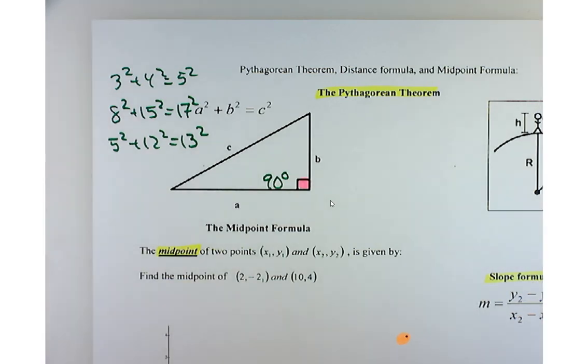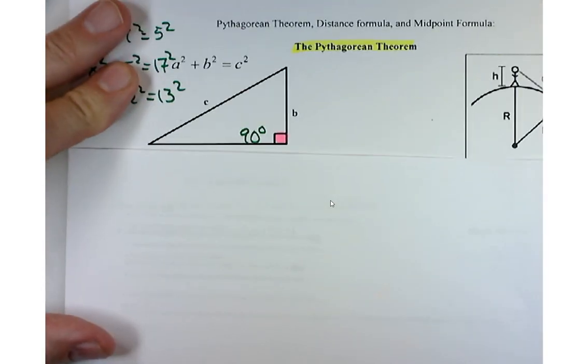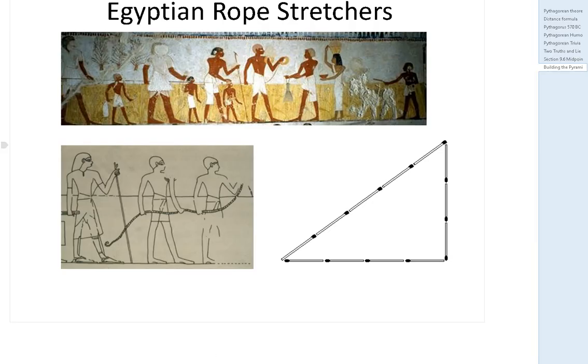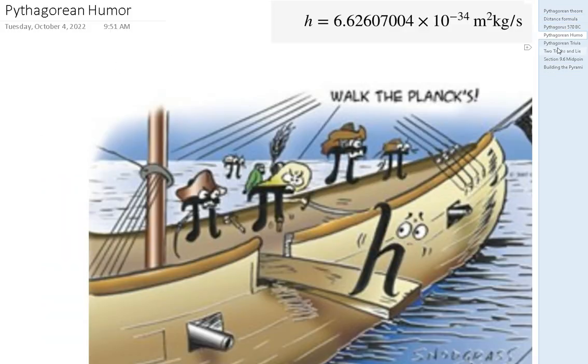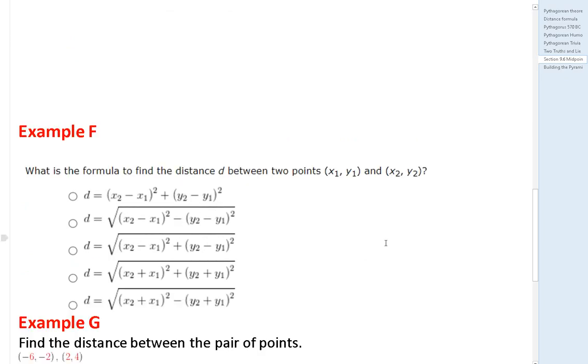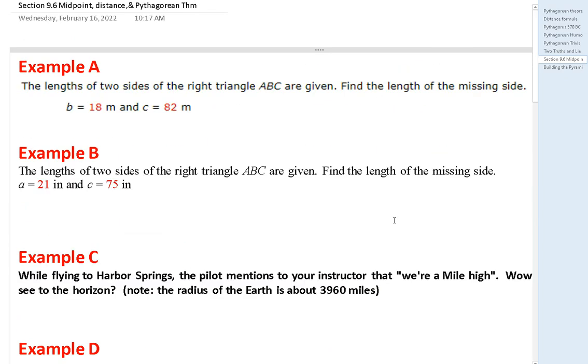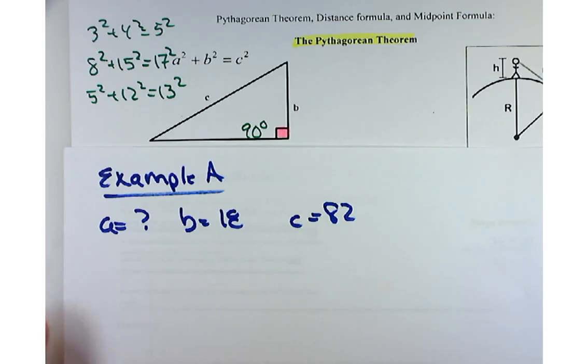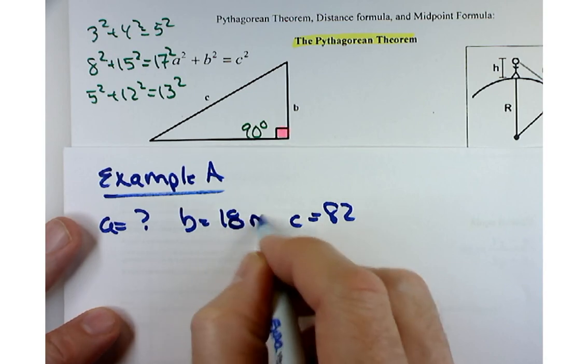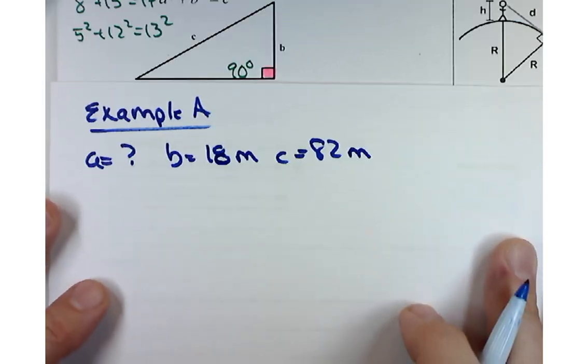We're going to solve some problems involving right triangles. The length of two sides of a right triangle are given to find the length of the missing side. Example A: the things to note are what's known and what's unknown. I don't know what side A is, but I do know B and C. B is 18 meters, C is 82 meters. We've got to figure out the length of side A.